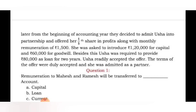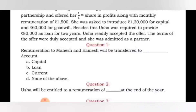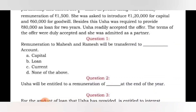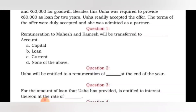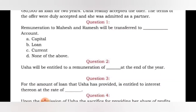Usha was asked to introduce 1 lakh 20,000 for capital and 60,000 for goodwill. Besides this, Usha was required to provide 80,000 as a loan for two years. Usha readily accepted the offer. The terms were duly accepted and she was admitted as a partner. The question asks: remuneration to Mahesh and Ramesh will be transferred to which account?